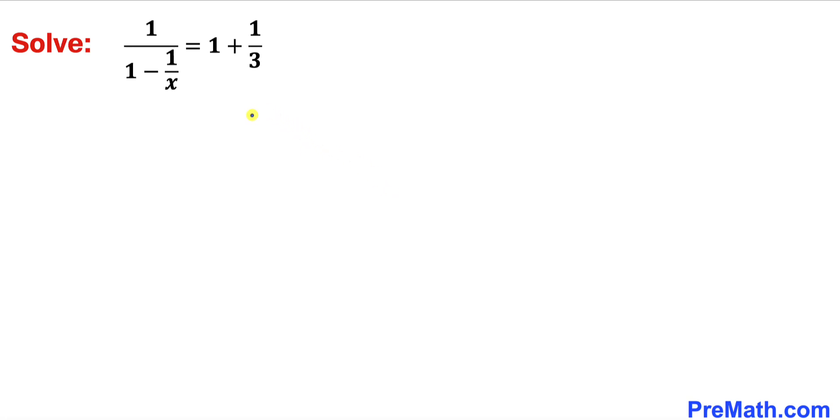Welcome to PreMath. In this video we are going to solve this given rational equation: 1 divided by 1 minus 1 over x, equal to 1 plus 1 divided by 3. Please don't forget to give a thumbs up and subscribe.